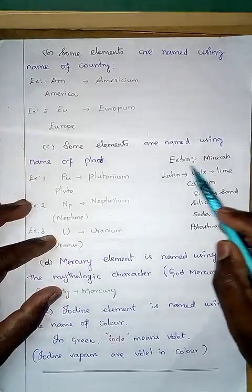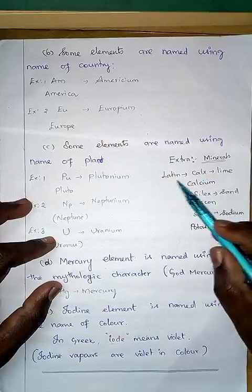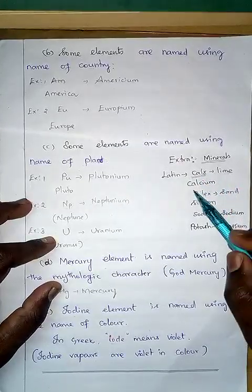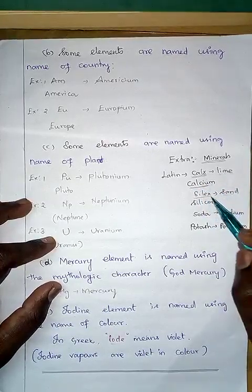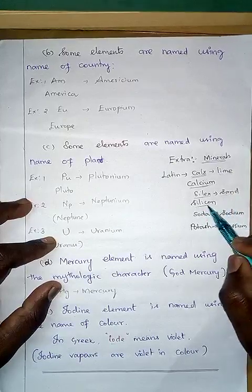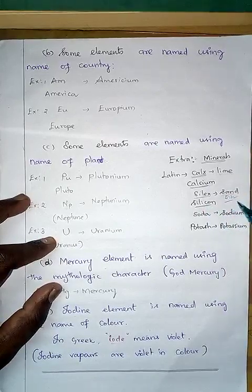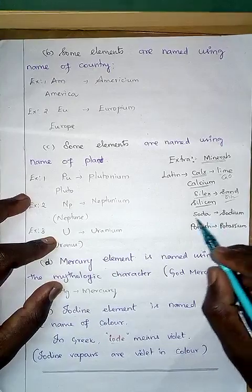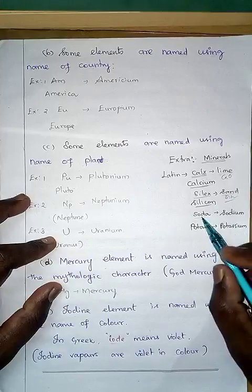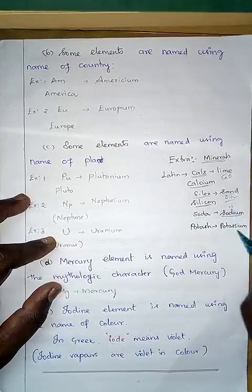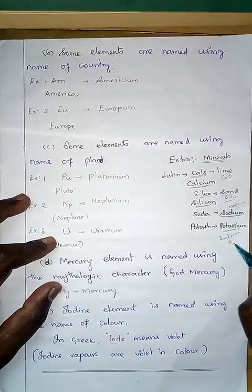As extra knowledge, some element names come from minerals. In Latin, calx means lime, so it is called calcium since lime contains calcium. Silex means sand in Latin, so silicon — sand mainly contains SiO₂. Soda contains sodium and potash contains potassium, which is why these names relate to them. The Latin name of sodium is natrium and of potassium is kalium, so their symbols Na and K are derived from Latin.